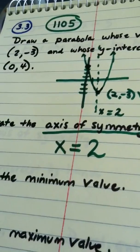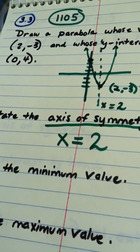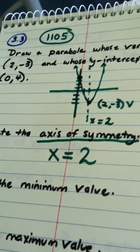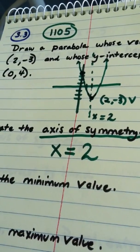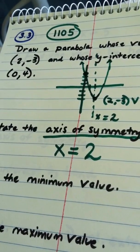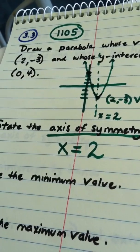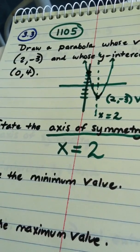The axis of symmetry is always x equals, and then it's the first coordinate of the vertex. And, again, symbolically, what that line does, and the reason, of course, it's called the axis of symmetry, is on either side of that line, you see symmetry of that parabola.